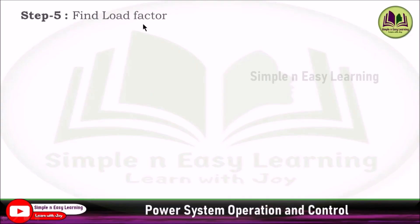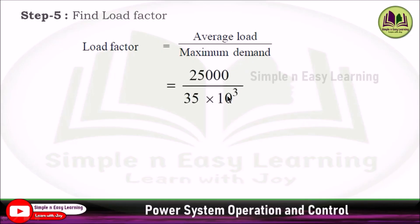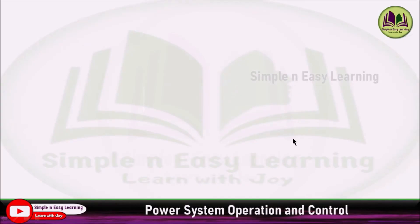Step 5: find load factor. Load factor is average load divided by maximum demand. These two values already we found in the previous steps. Direct substitution. Average load equals 25,000 divided by maximum demand is 35 megawatt. Convert that into kilowatt, so 35 into 10 power 3 kilowatt. That gives you the load factor of 0.7142, or in terms of percentage it is 71.42 percentage.